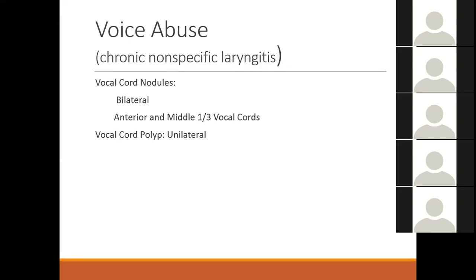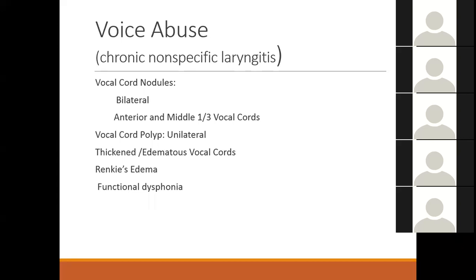Another cause of vocal abuse is polyps. They are usually smooth — the way to differentiate a polyp from a tumor is that a tumor usually has an irregular rough surface whereas polyps are smooth, so you can usually say on laryngoscopy that it is a benign polyp. The vocal cord may also be thickened or edematous; Reinke's edema causes the vocal cord to appear like a balloon. Functional dysphonia has already been discussed.